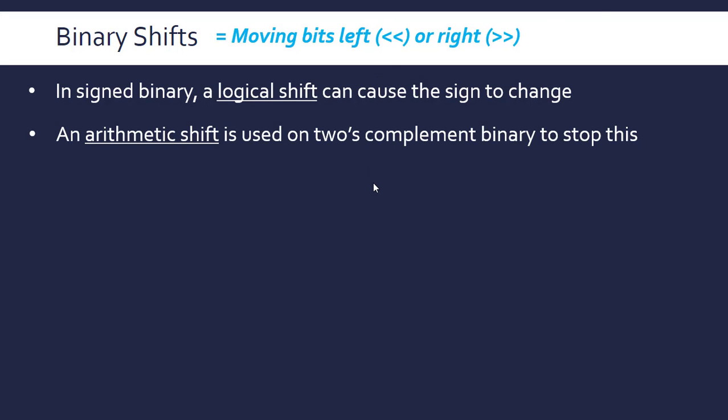An arithmetic shift is slightly different and is used on two's complement binaries—signed binaries, either positive or negative. Whereas before we were talking about just positive integers, arithmetic shift basically prevents this from being a problem.